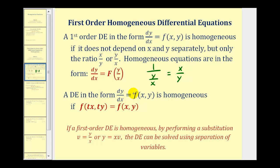Another definition for a first order homogeneous differential equation is: a DE in the form of dy/dx equals f of x comma y is homogeneous if f of tx comma ty equals f of x comma y. This second definition is helpful if the function f of x comma y is complicated or if it's hard to write it as a function of a ratio.